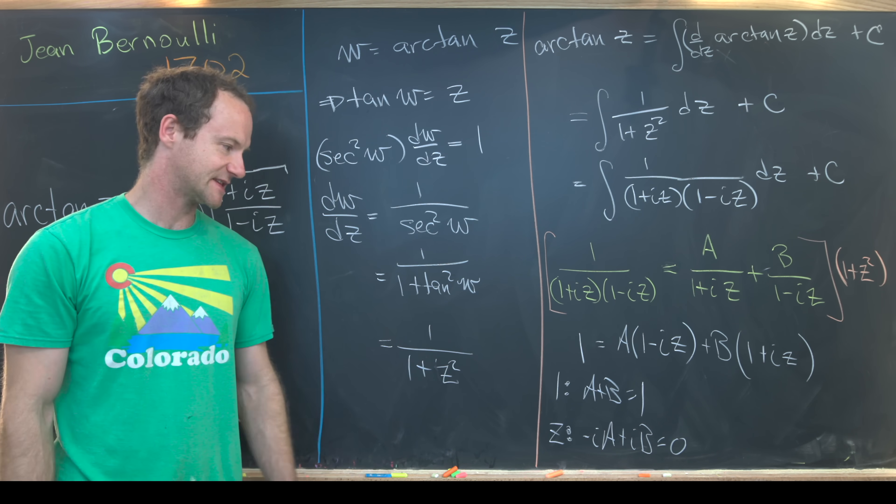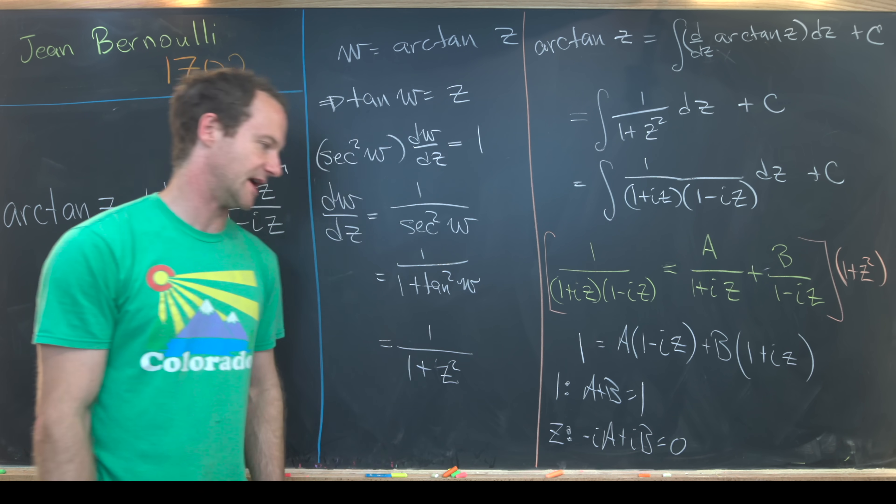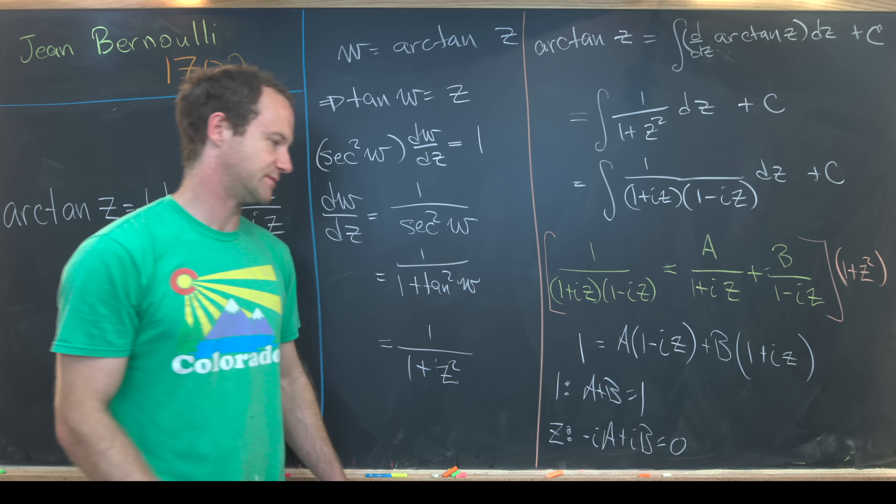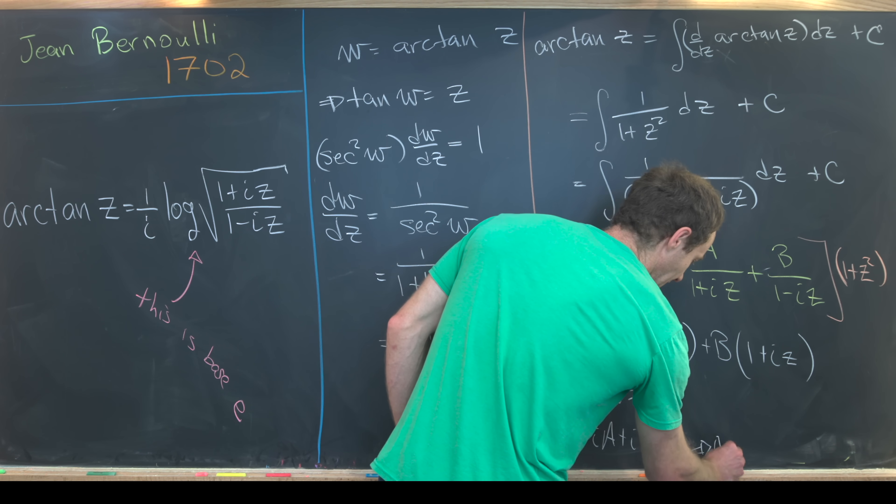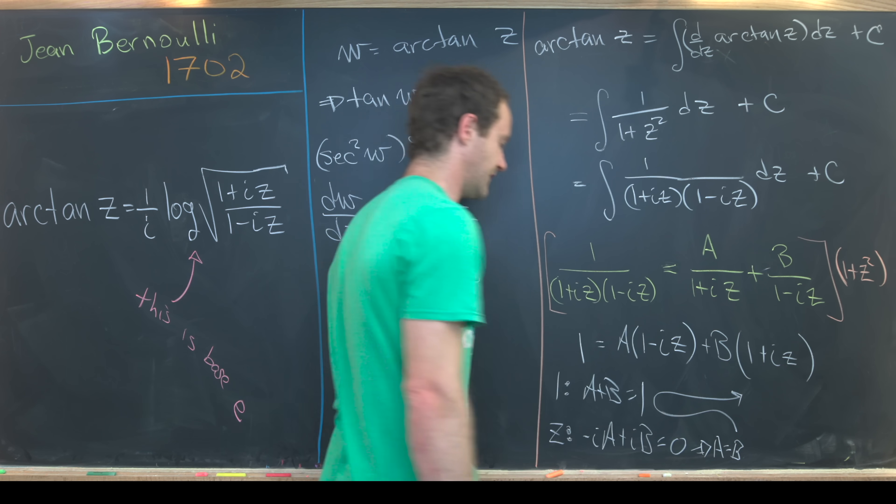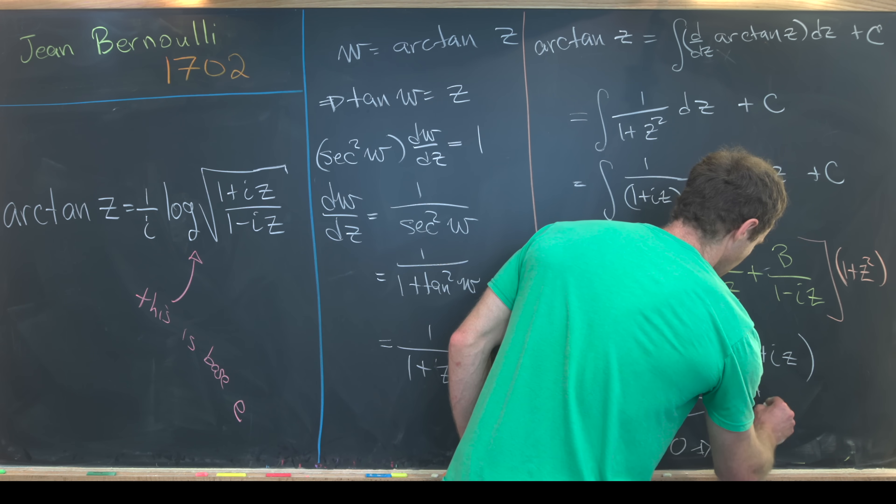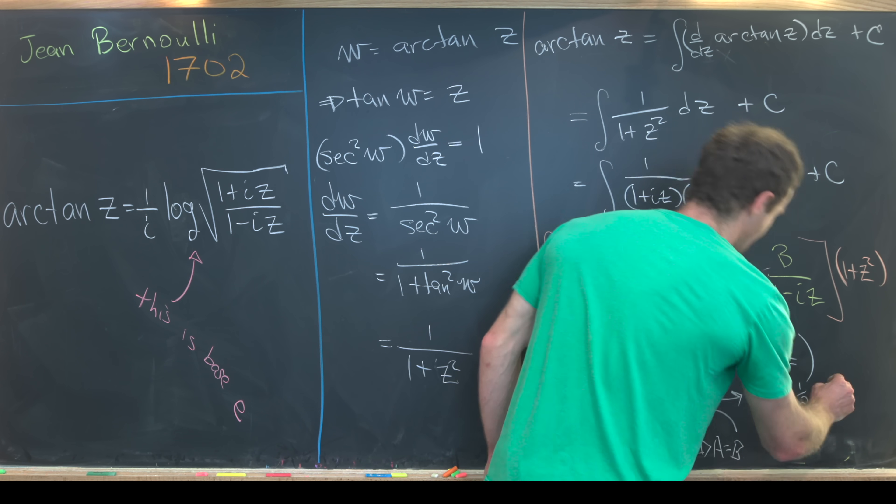Notice this tells us that a has to be equal to b just by dividing an i out. We get minus a plus b is equal to zero. In other words, a is equal to b. But then rolling that through the first equation, we see that they are both equal to one-half. So a equals b equals half.